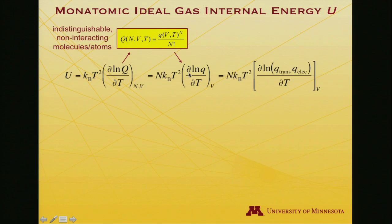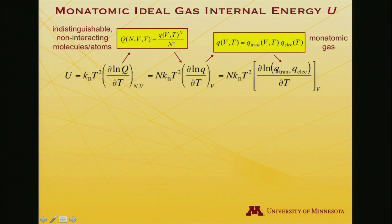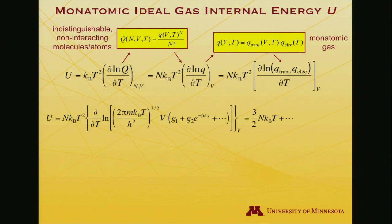I have it to the Nth power, so when I take a logarithm, I get an N out front. I take the partial derivative of the log of little q with respect to temperature. Now I plug in for little q the translational partition function times the electronic partition function, because that's what the atomic partition function is for a monatomic gas. So let's substitute the correct expressions.